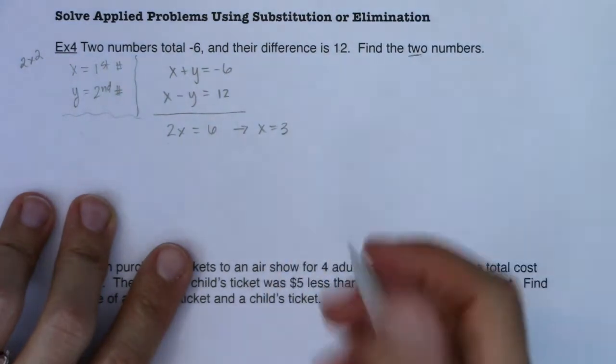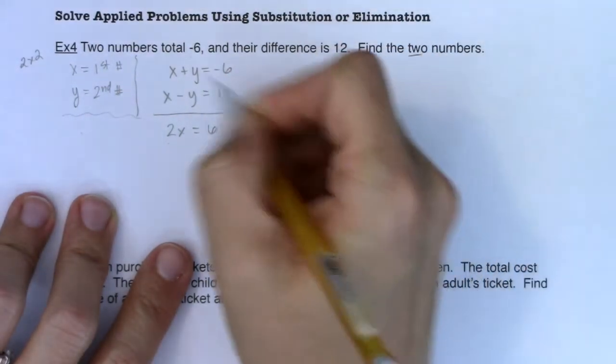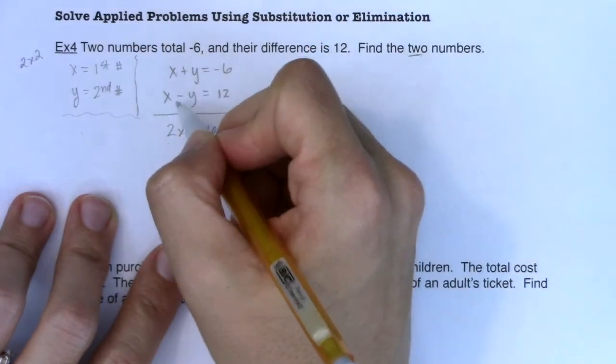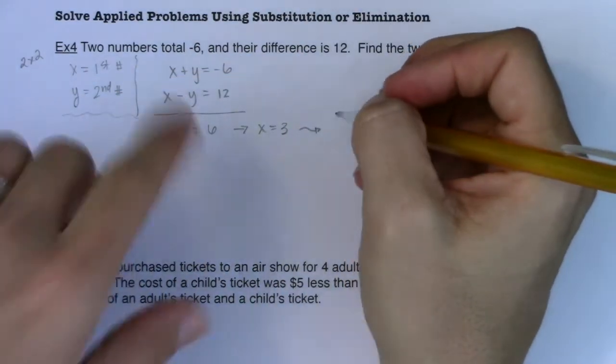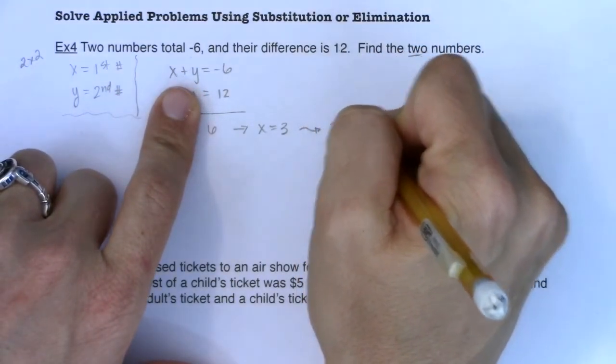From here, I can substitute X equals three into either the top equation or the bottom equation. I'm going to put it in the top equation. So we have three plus Y equals